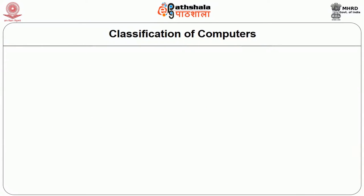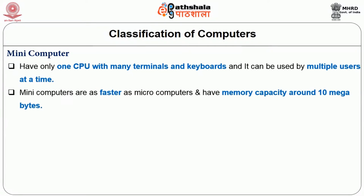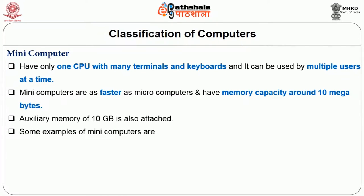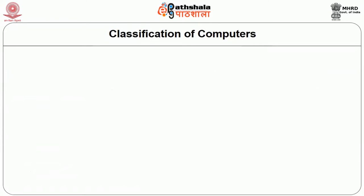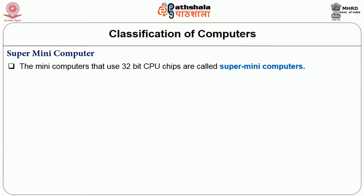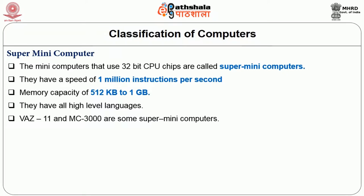A mini computer has only one CPU with many terminals and keyboards, and can be used by multiple users at a time. Mini computers are as fast as microcomputers and have memory capacity around 10 megabytes, with auxiliary memory of 10 GB also attached. Examples include PDP 8, PDP 11, PDP 11/70, etc. Super mini computers use 32-bit CPU chips, with a speed of 1 million instructions per second and memory capacity of 512 KB to 1 GB. VAX 11 and MC300 are some examples.